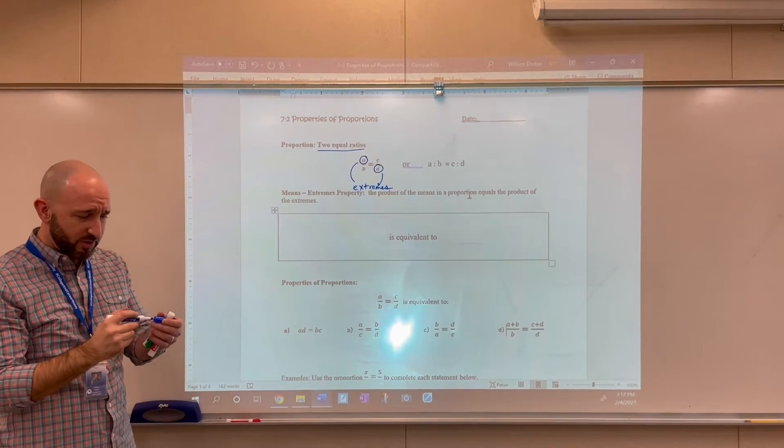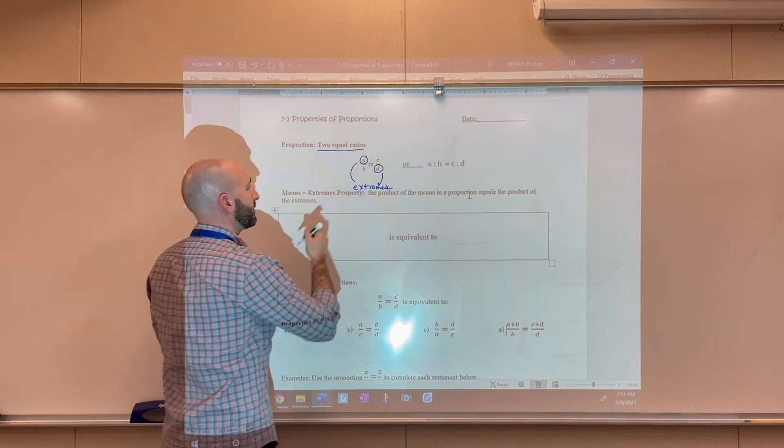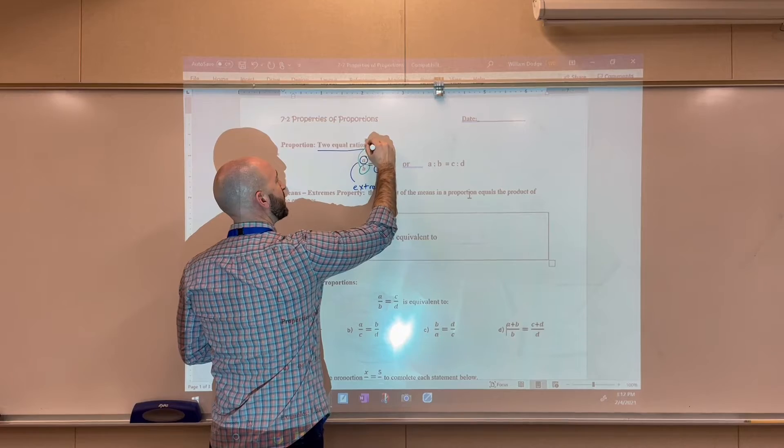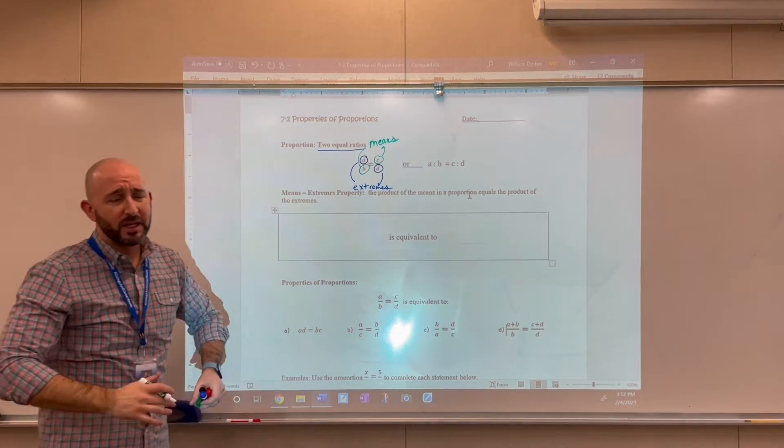So A and D are called extremes. Now B and C, on the other hand, are called the means.